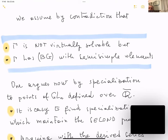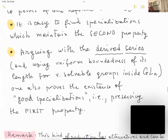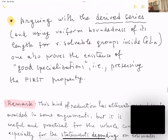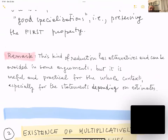It is a little more intricate to maintain the fact that Γ is not virtually solvable, because the derived series could a priori be very long. But one uses the uniform boundedness of the length of the derived series which produces solvability, and this is known inside GL(m). Once we have this uniform boundedness, one can prove the existence of good specializations that preserve this effect. This kind of reduction for the first theorem has alternatives, because we then use other Diophantine theorems known to hold for arbitrary fields of characteristic zero.